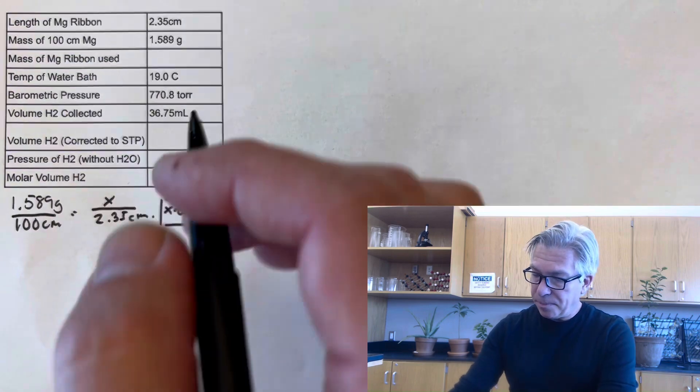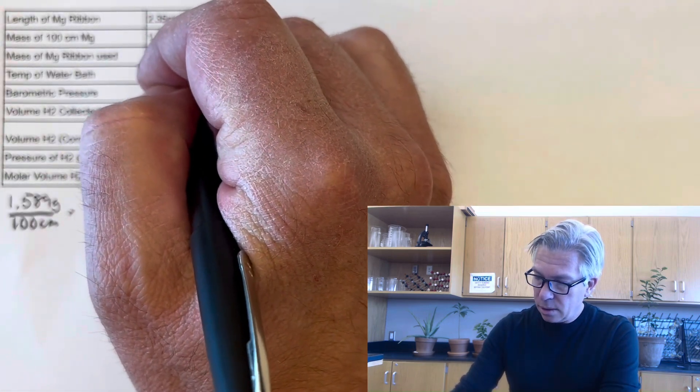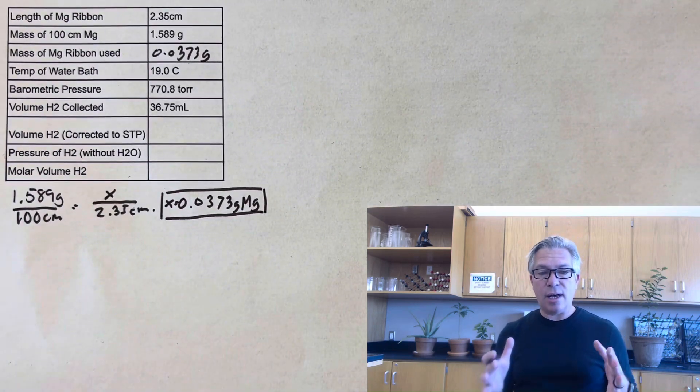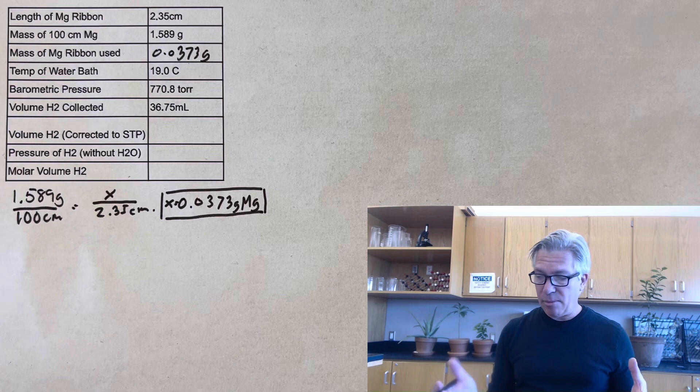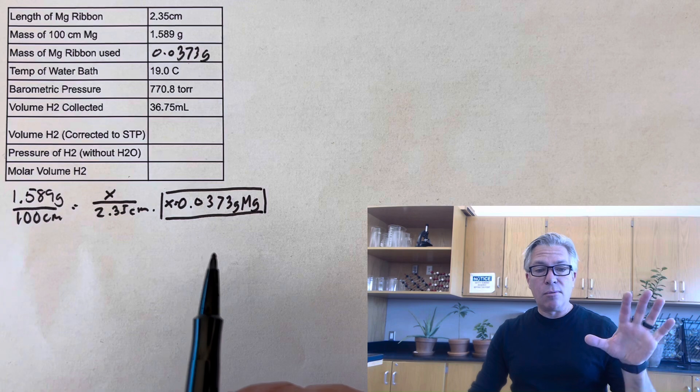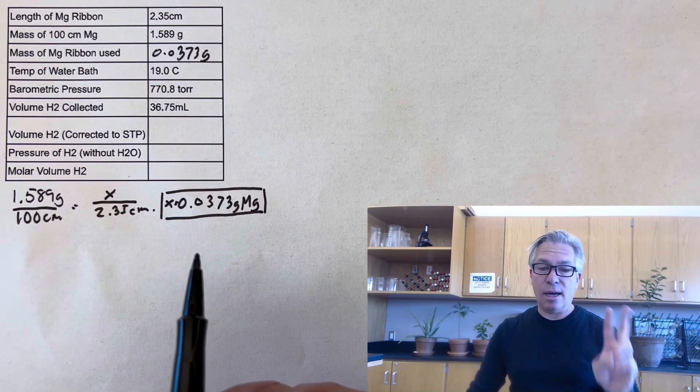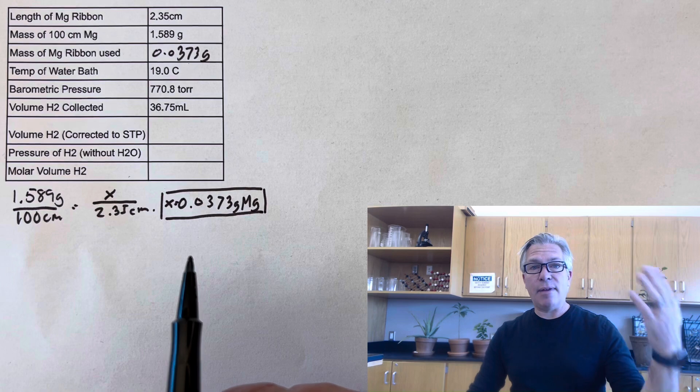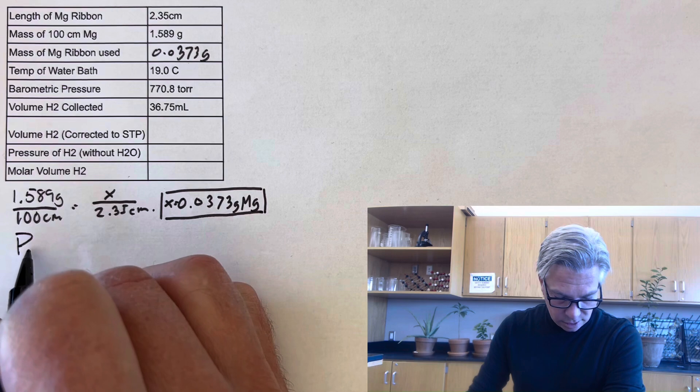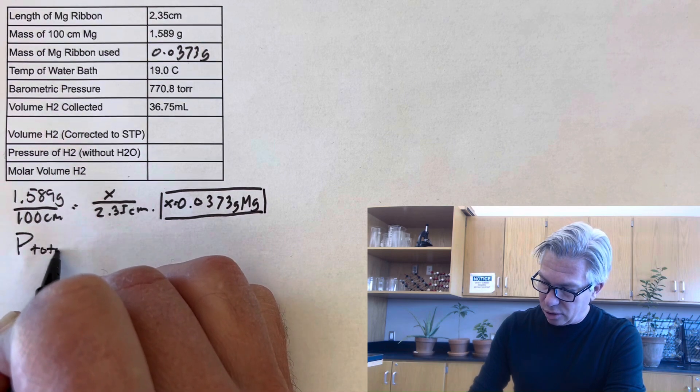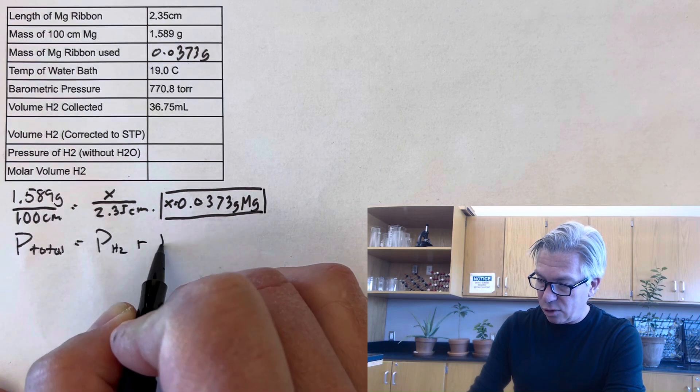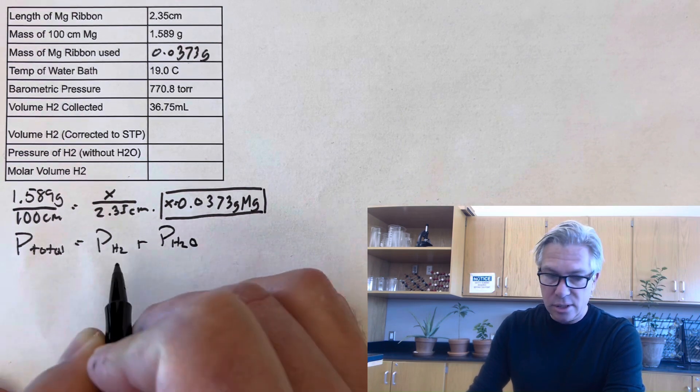The next thing I want to do is to figure out the exact pressure of the hydrogen in my apparatus. Now, the barometric pressure was 770.8. But remember that that pressure is made up of two gases, the hydrogen and the water vapor that evaporated into the space. So what we're going to do is make use of Dalton's law, which says the total pressure of a mixture of gases is equal to the sum of the partial pressures of the individual gases, which is hydrogen and water.